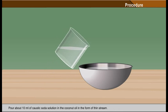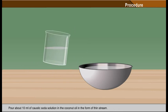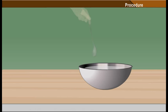Pour about 10 millilitres of caustic soda solution in the coconut oil in the form of thin stream. Stir the mixture continuously for 2 minutes.